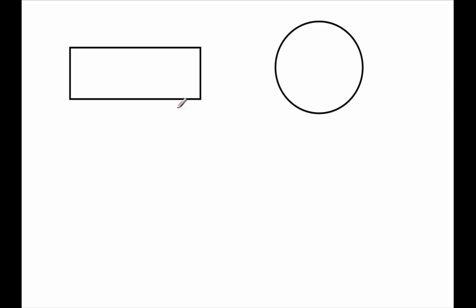I'm looking at the rectangle here, and I'm going to draw a line going straight down the middle. Effectively what I've done is made halves, and then what I'm going to do is take half of the half — go to the middle of it and partition that. Then I'm going to go to the other half and partition that. And now what I've done is I've created four equal shares.